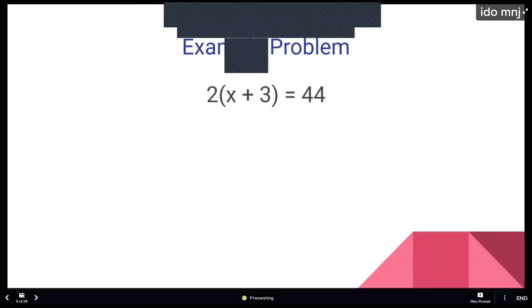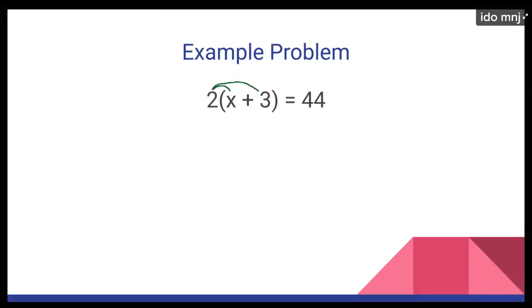Okay. So here's our example. We have two outside parentheses. We could distribute this two through. Now someone asked me during a warm-up, how do you know to distribute? Well, I see parentheses. I want to get rid of those parentheses. So I'm going to distribute this through. So I get 2 times x, which is 2x. I get 2 times 3, which is 6. And that equals 44.